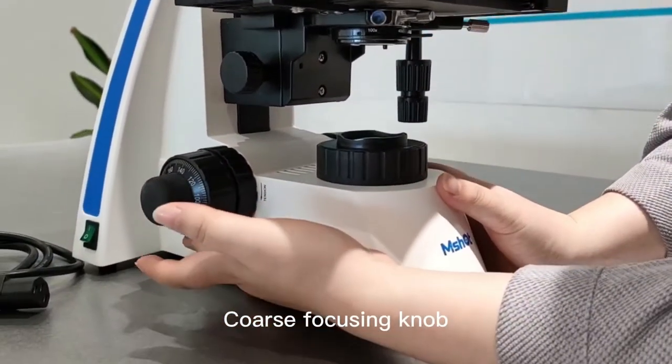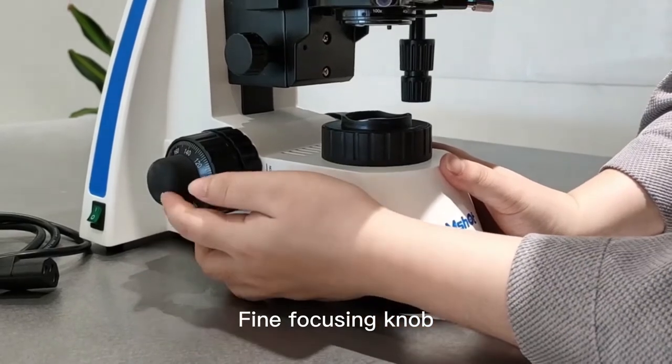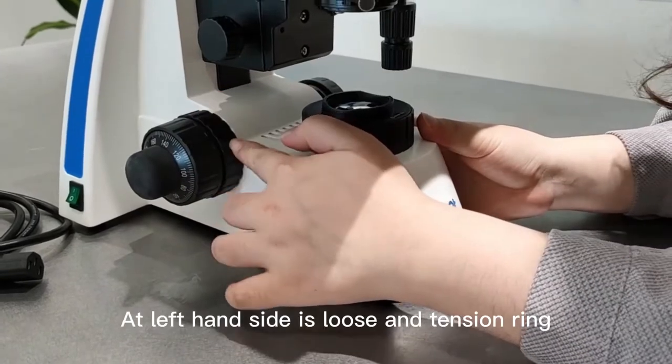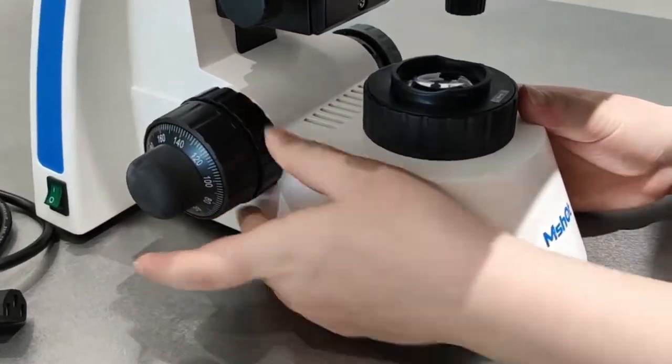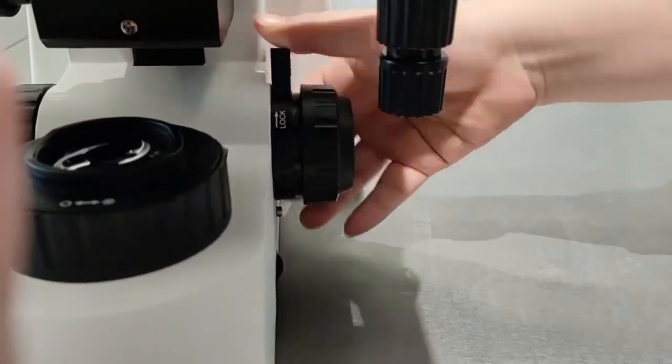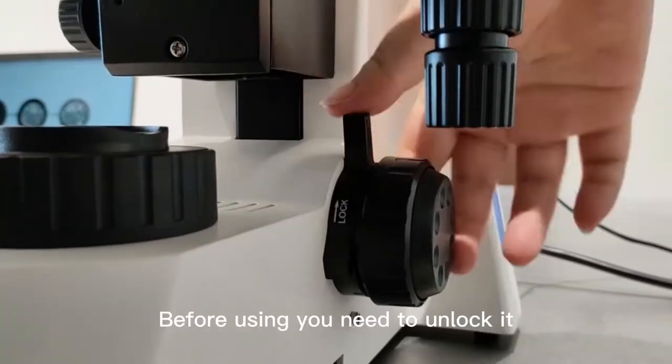Coarse focusing knob. Fine focusing knob. There are devices in the knobs. At the left-hand side is the loose and tension ring, and the right-hand side is the lock device. Before using, you need to unlock it.